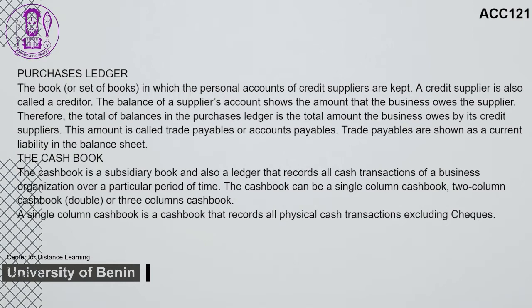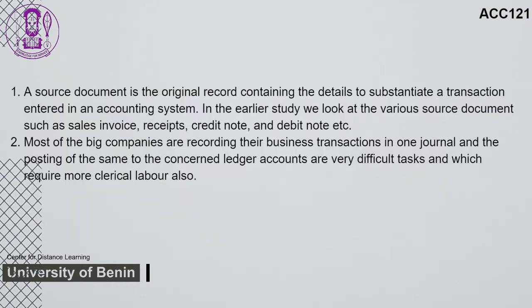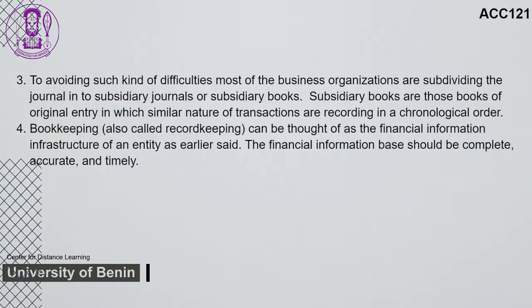Summary for Study Session 1: A source document is the original record containing the details to substantiate a transaction entered in an accounting system. Most large companies record business transactions in one journal, and posting to the concerned ledger accounts is a very difficult task requiring more clerical labor. To avoid such difficulties, most business organizations subdivide the journal into subsidiary journals or subsidiary books — books of original entry in which similar nature of transactions are recorded in chronological order. Bookkeeping, also called recordkeeping, is the financial information infrastructure of an entity; the financial information base should be complete, accurate, and timely.